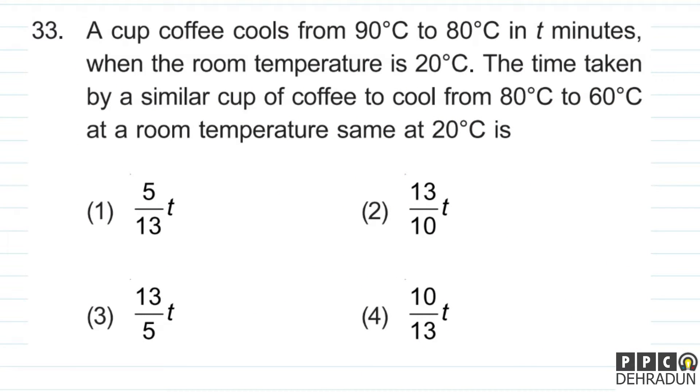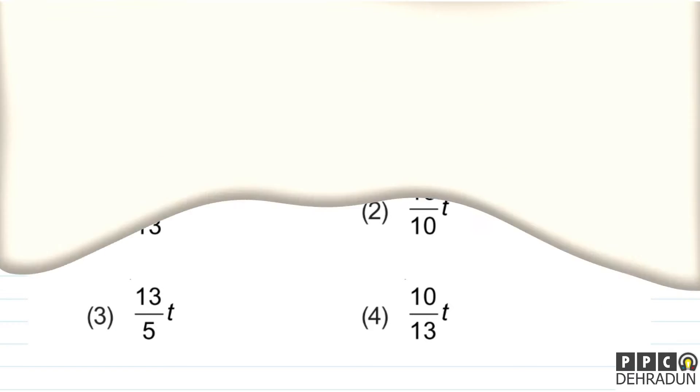Let's have a look at question number 33. The question says: a cup of coffee cools from 90°C to 80°C in t minutes when the room temperature is 20°C. The time taken by a similar cup of coffee to cool from 80°C to 60°C at a room temperature same at 20°C is?